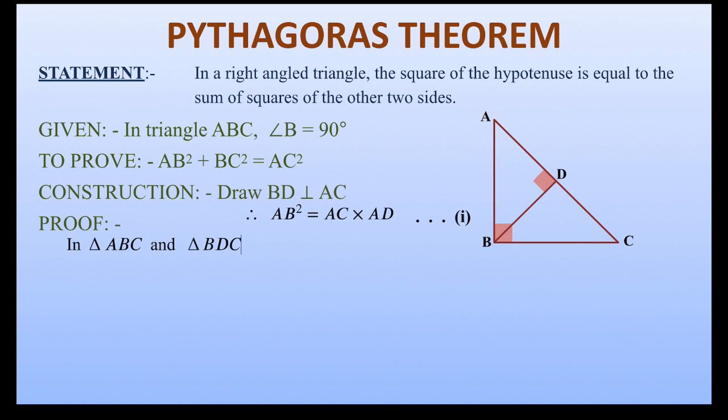Now in triangle ABC and BDC, the main triangle and the lower part of the main triangle, again we can see that angle B and angle D are 90 degrees each and angle C is a common angle.